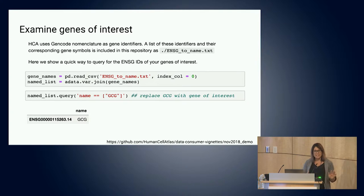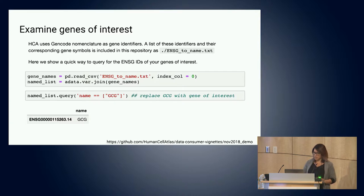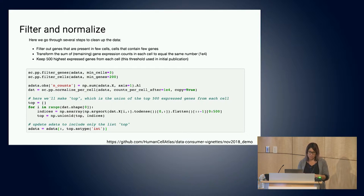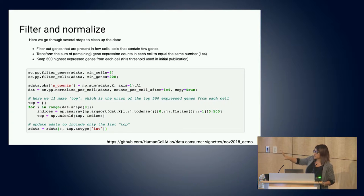I wanted to do a quick aside to highlight that in the HCA-DCP, we use GenCode nomenclature as gene identifiers. These are precise and well-versioned, so they're very good for a robust and reproducible pipeline, but they're not necessarily the names we're used to referring to our favorite genes with. So inside this notebook, there's a list that helps you understand what genes you're looking at. I'm showing you here a few steps for filtering and normalizing the data - we're just trying to show you quickly that with a file downloaded from the DCP, we're able to capture the same biological signature that the original author showed.